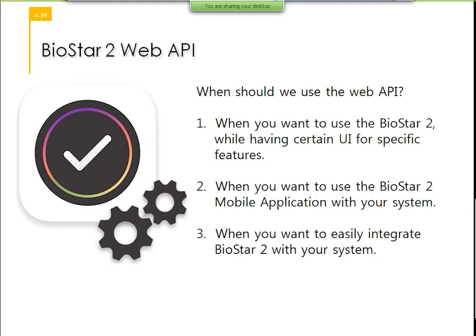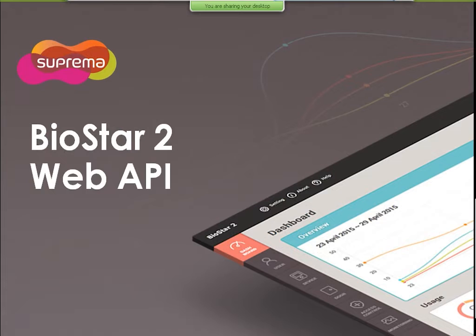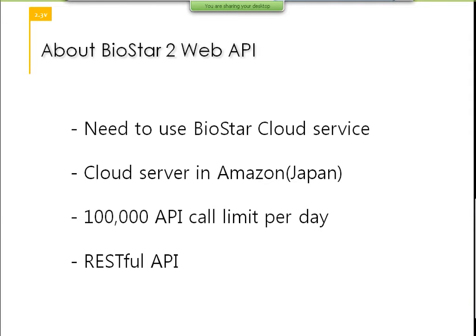It's actually using the cloud, but it can be both. Also, when you want to easily integrate Biostar 2 with your system, the Biostar 2 web API integration will be at an easier level — it's very simple. Now I'll talk about two types of APIs today: the Biostar 2 web API and the Biostar 2 API server, which is a different concept. You'll see when we go through the slides. To use the Biostar 2 web API, you need to use the Biostar cloud service. This is why we call it the web API — because you need access on the web to use the API.